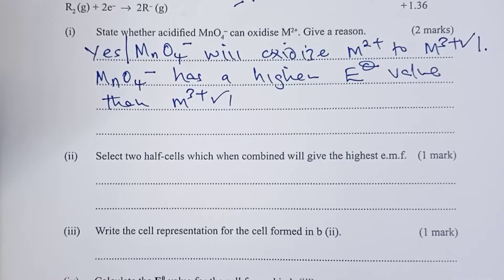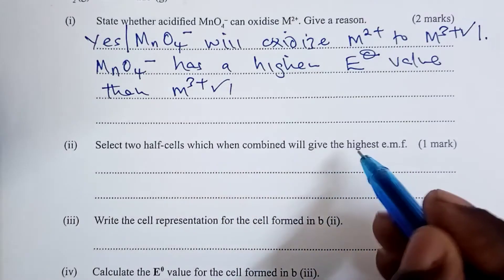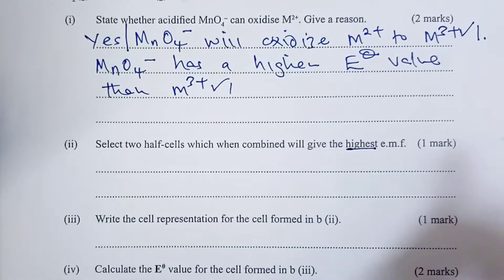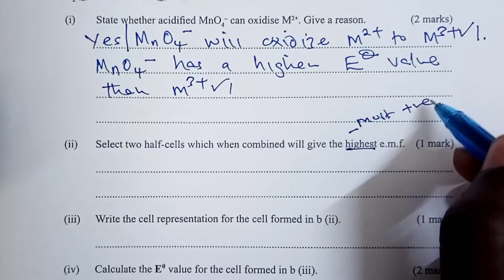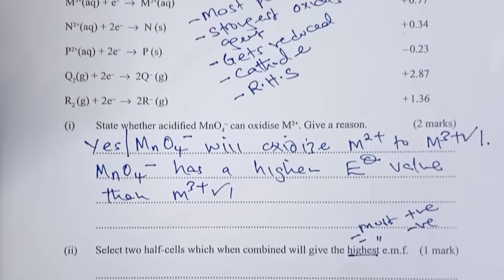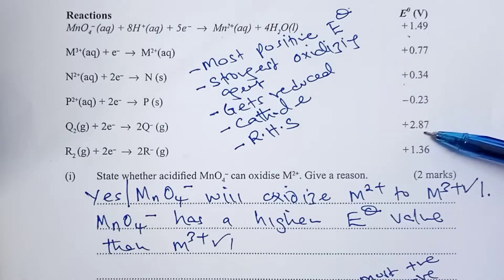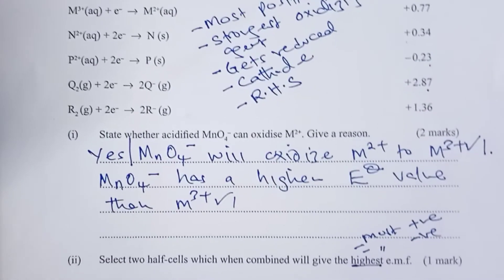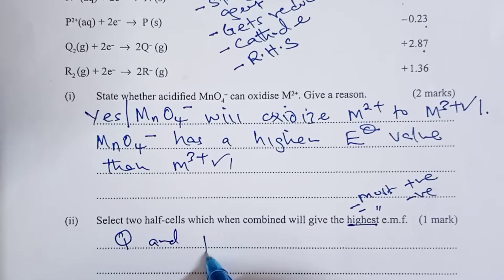Question 2: Select two half cells which, when combined, gives the highest EMF. We choose the half cell with the most positive and the one with the most negative. The most positive is Q and the most negative is P. The answer is half cell Q and P.